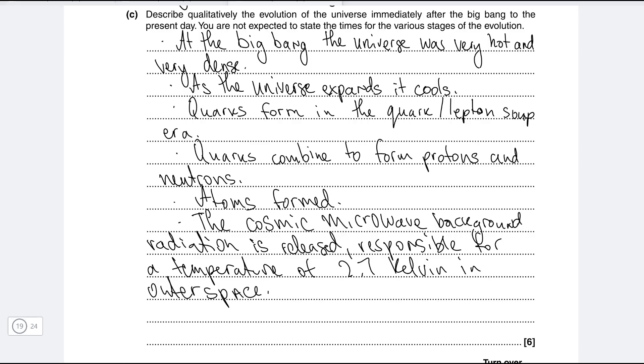So at the very beginning at the big bang the entire universe was very hot and very very dense. In fact infinitely dense right at the start. As the universe is expanding it is also cooling down. And quarks form in this quark-lepton soup era. Remember quark is a particle that makes up the protons. The quarks then are going to combine to form protons and neutrons and suddenly we have the ingredients to form atoms and atoms are formed. Eventually the cosmic microwave background radiation is released which is responsible for a temperature of 2.7 kelvin in outer space.